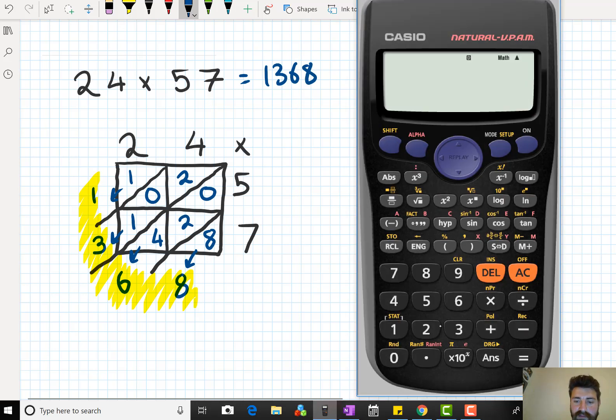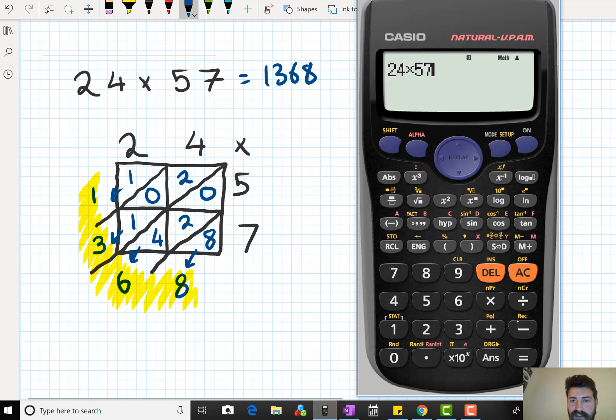Alright, just to double check that. 24 times 57, 1,368, as you can see around the edge there.